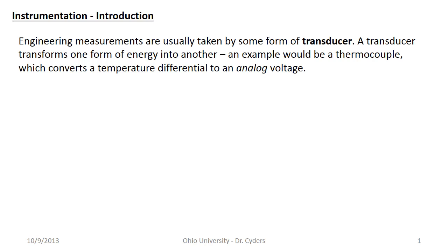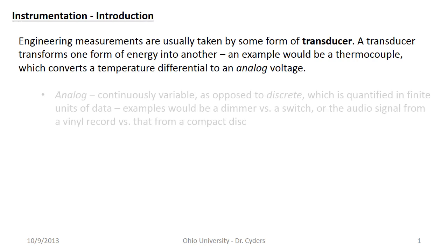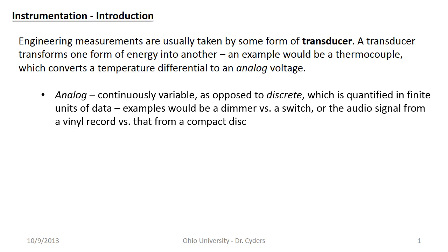We have transducers of all sorts of different types to read all sorts of different variables. When I say analog, analog means continuously variable, as opposed to discrete. If you know what a continuously variable transmission is, it's the difference between a conventional transmission and a CVT. Another example would be a dimmer versus a switch — a dimmer lets you adjust brightness infinitely, whereas a switch only gives you a few discrete settings like off, dim, and bright. That would be a discrete system, which is what digital systems typically look like.